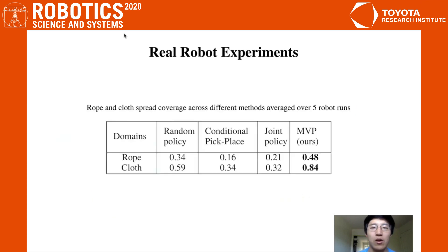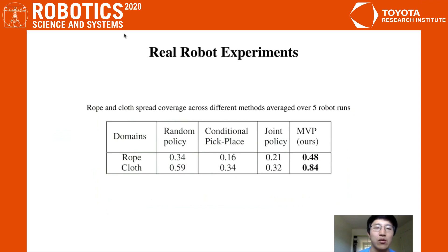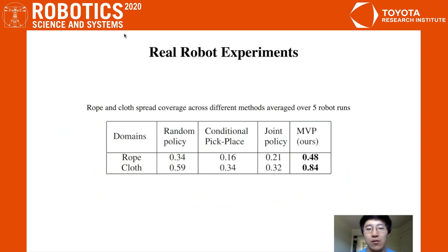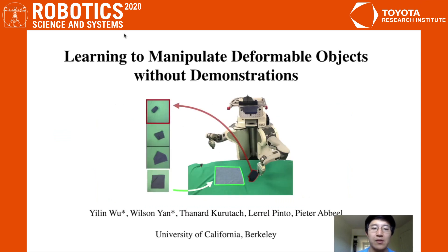Here are the real robot experiment results. In summary, the evaluation metric we used was rope and cloth spread coverage across different runs, comparing different methods. As you can see, our method vastly outperforms our baselines. Thanks for watching.